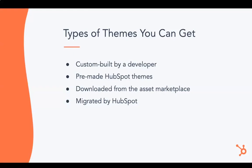There are a few different types of themes in CMS Hub. You can get a theme custom built by a developer on your own team or through a solutions partner. There are pre-made HubSpot themes included by default in all CMS Hub portals - that's what we'll work with today. You can also download themes from the asset marketplace, or if you have your website migrated to HubSpot by HubSpot, they'll create a custom theme to suit your website.